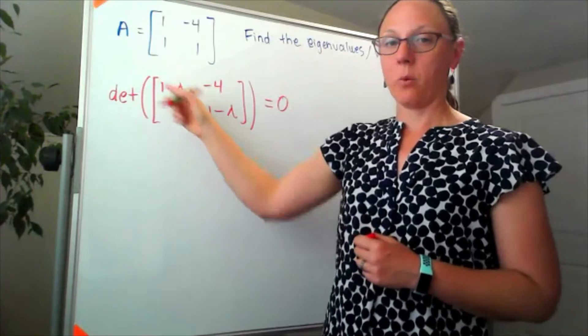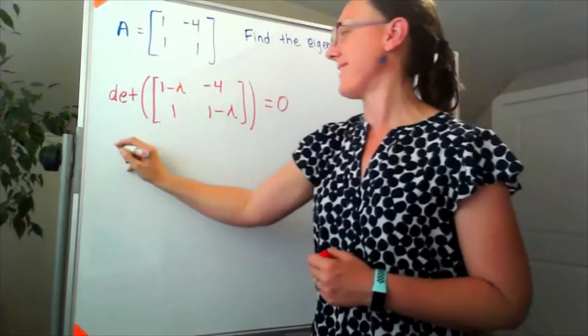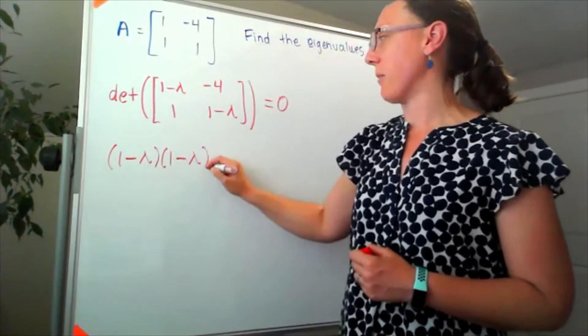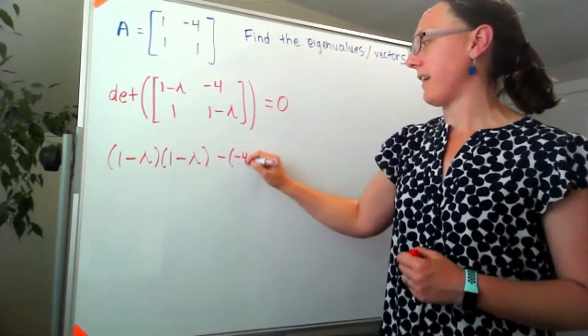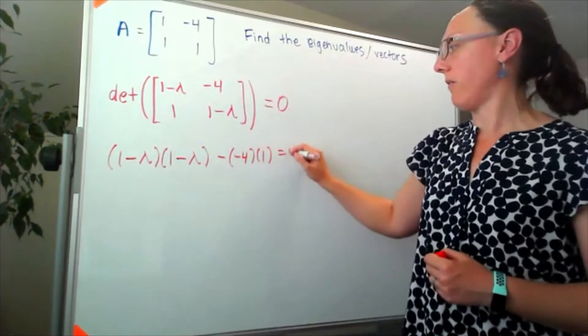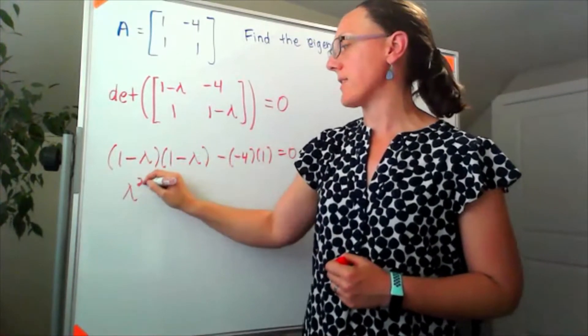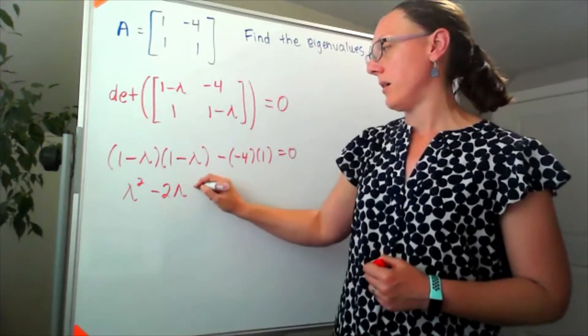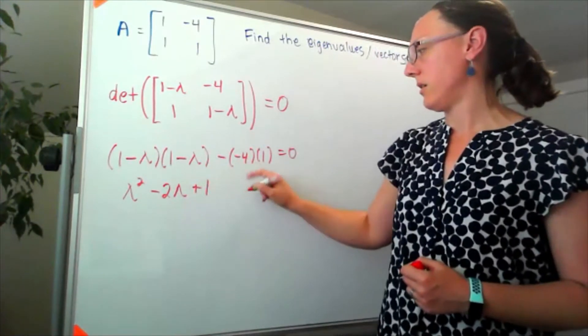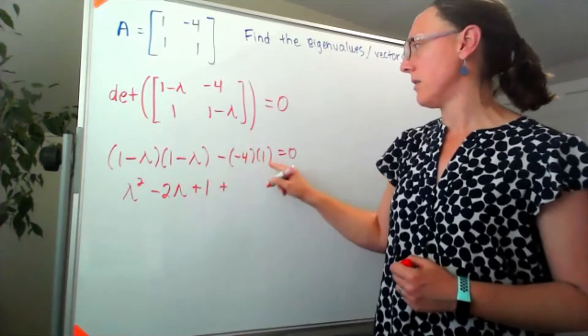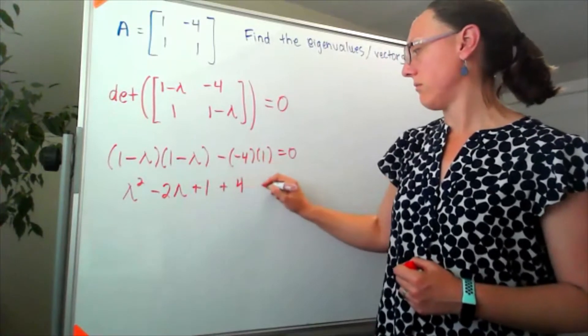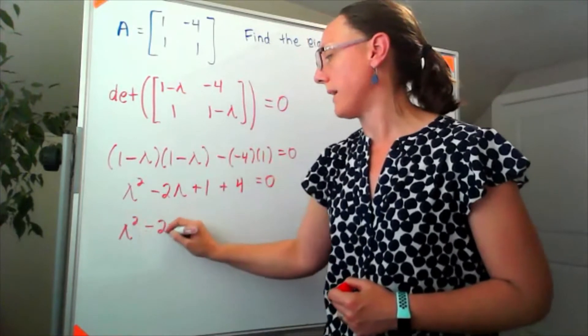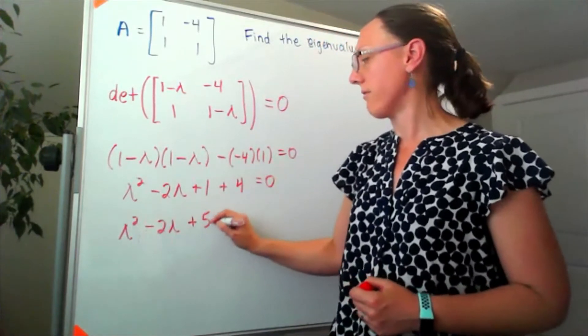Finding the determinant, I've got 1 minus lambda times another 1 minus lambda minus negative 4 times 1. If I distribute this out, I've got lambda squared minus 2 lambda plus 1 plus 4. So that's lambda squared minus 2 lambda plus 5.